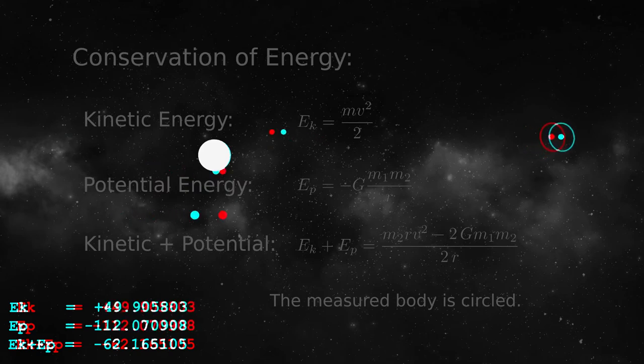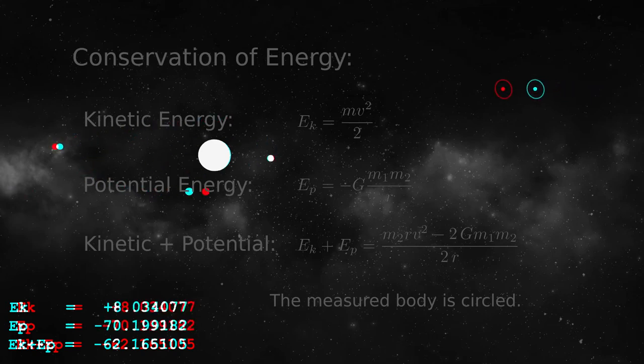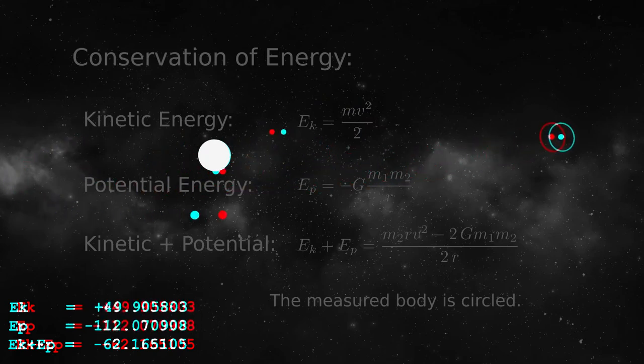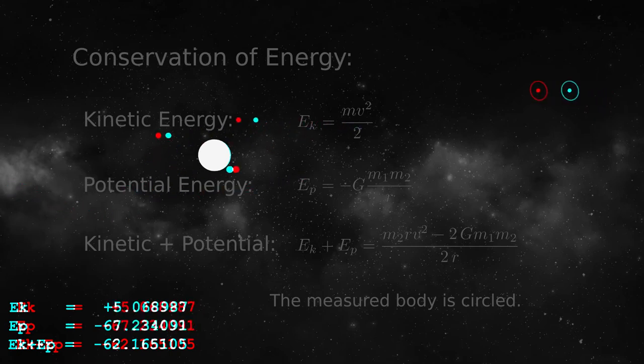After some refinements and tuning, my numerical model confirms energy conservation to eight decimal places. In the lower left of the display are two changing numbers, kinetic and potential energy, and a third number which is the unchanging sum of the energies. This was a fun project and a useful result.